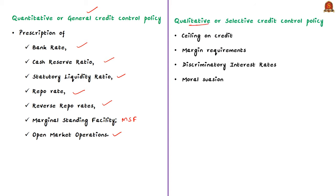Under the qualitative or selective credit control policy, RBI may impose a ceiling on credit — that is, it will restrict the lending capacity of banks to grant loans against specific securities. It may also impose margin requirements. Margin means the proportion of the value of security against which loan is not given. Margin against a particular security is reduced in order to increase credit flow to a particular sector, and it is increased to decrease credit flow.